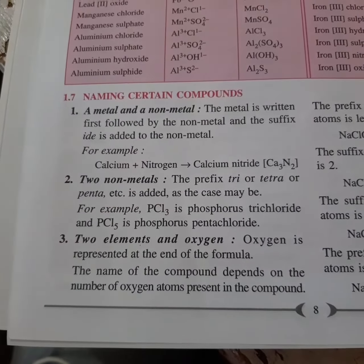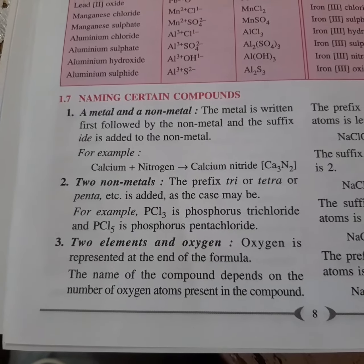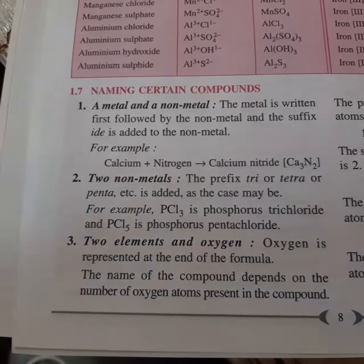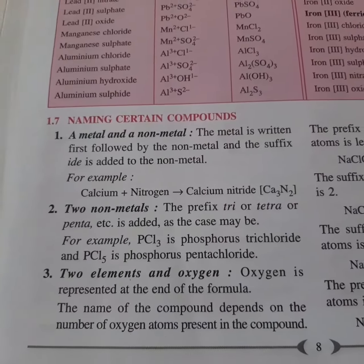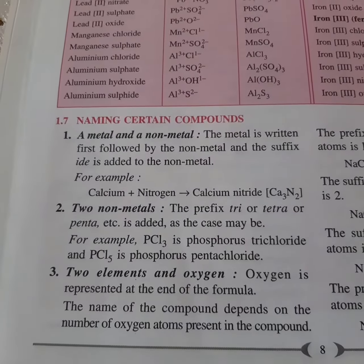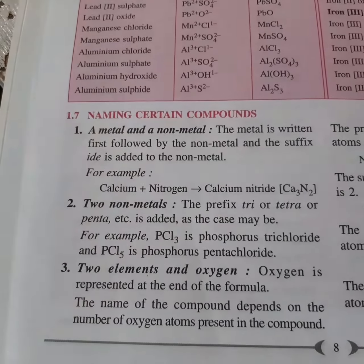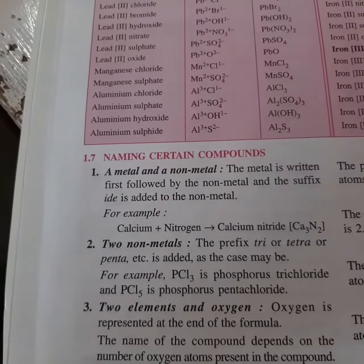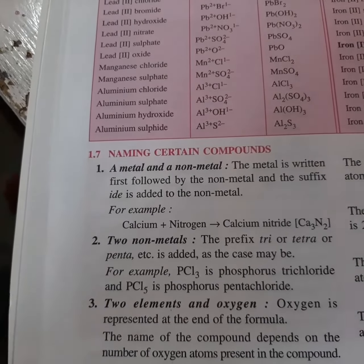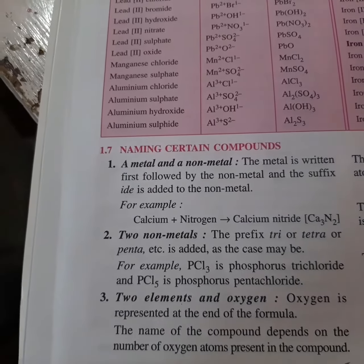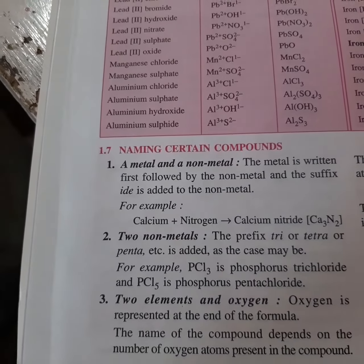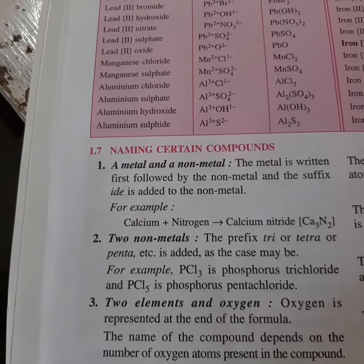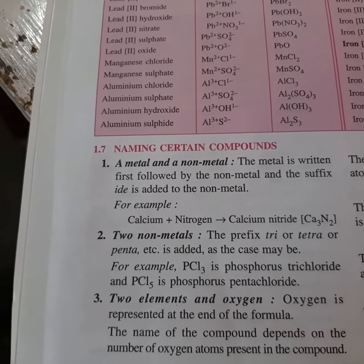The first basic rule while naming a compound is that metals and non-metals generally combine to form a compound. So a metal is always written first, followed by a non-metal. The metal's name remains as it is — the cation's name remains as it is — whereas in the case of an anion or acidic radical, the name of the non-metal is modified.